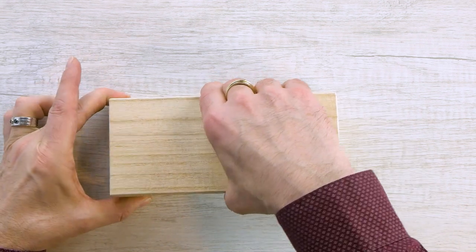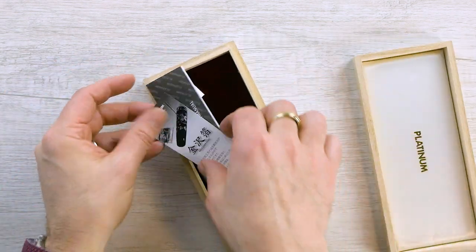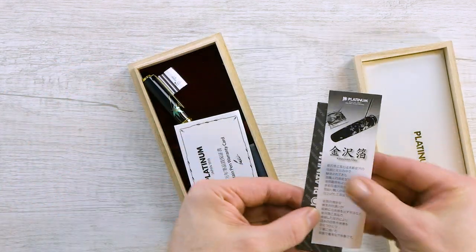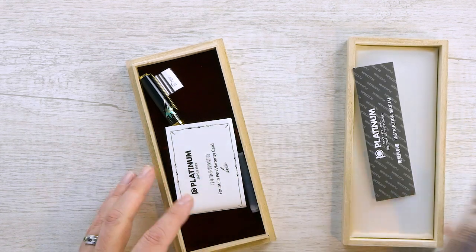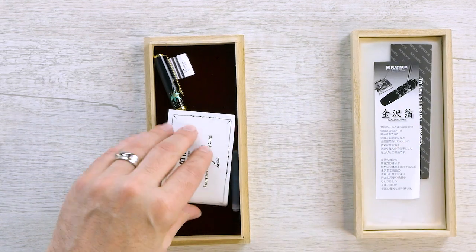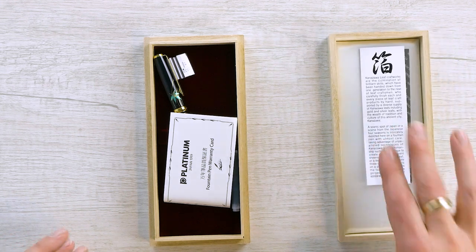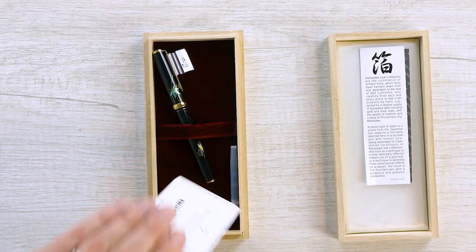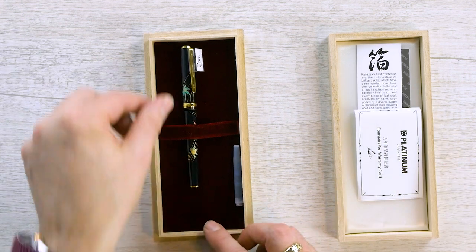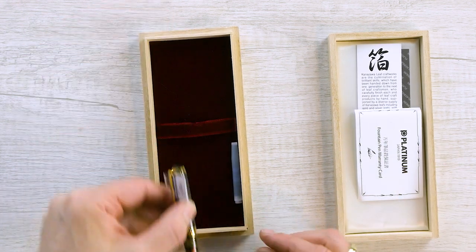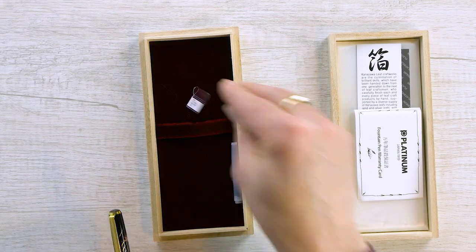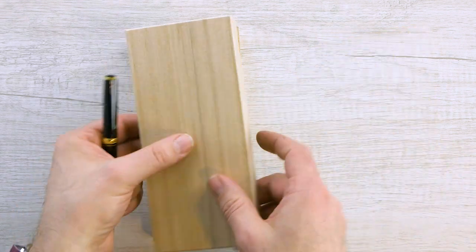And we have a nice bamboo box. And if I open this up, we've got our instruction manual. A little bit of information about the pen and the Kanazawa leaf. We'll talk about that in a bit. Warranty card and there is our pen with our cartridge. So let's take a look.